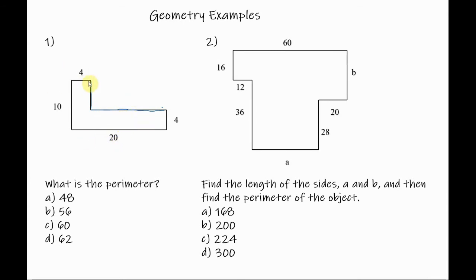So since this side length here is 4, that means that this piece here is equal to 4, which means that this side length is equal to 20 minus 4 which is equal to 16.